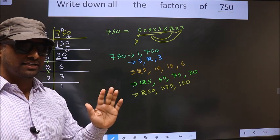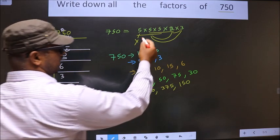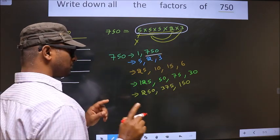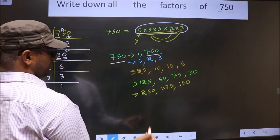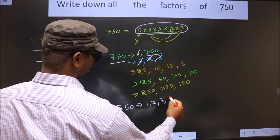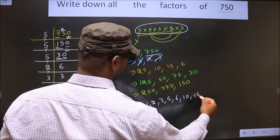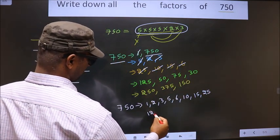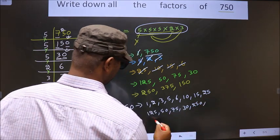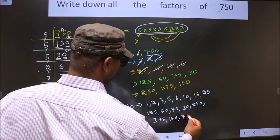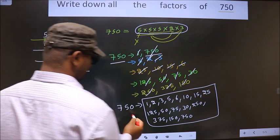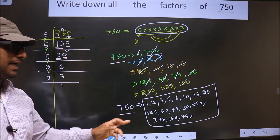Now you take the combination of all five numbers. Here we have only five numbers, so if we take all five we get 750 itself. Thus, these are all the factors of 750: 1, 2, 3, 5, 6, 10, 15, 25, 30, 50, 75, 125, 150, 250, 375, and 750.